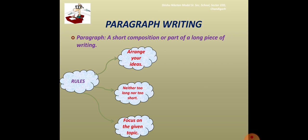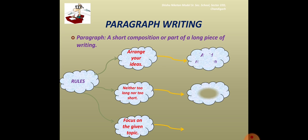For example, if you are given a topic of 'my mother' and in that paragraph you are talking about your father, it means you have deviated from your main topic. So you need to focus only on the main topic given to you. A paragraph becomes boring if you repeat the same point over and over again, so avoid repetition.